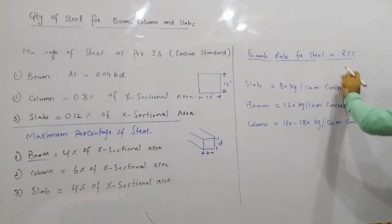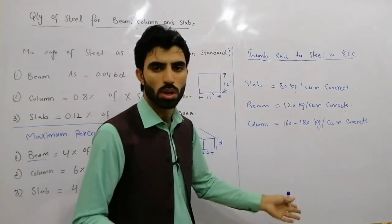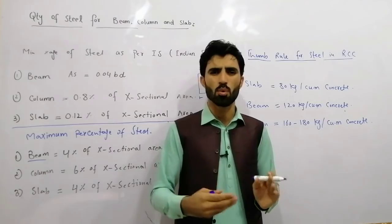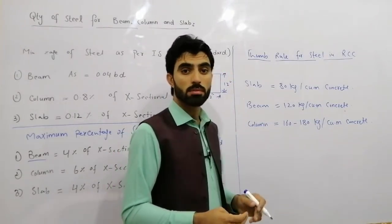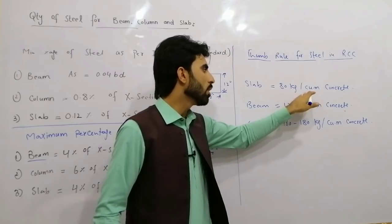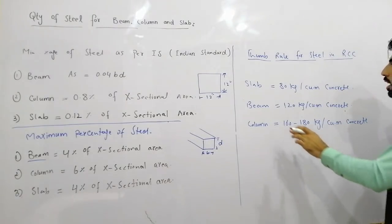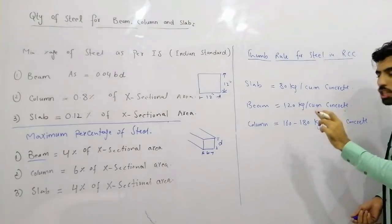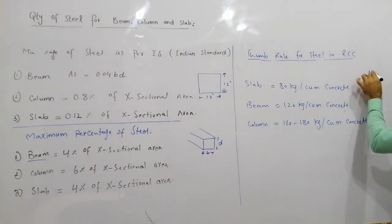Now the thumb rule for steel in RCC structures. This is an older method suitable for residential or normal domestic buildings — for example, if you want to design a two or three room house. For slab, by thumb rule, take 80 kg of steel per cubic meter of concrete. So for one cubic meter of concrete in a slab, use 80 kg of steel.